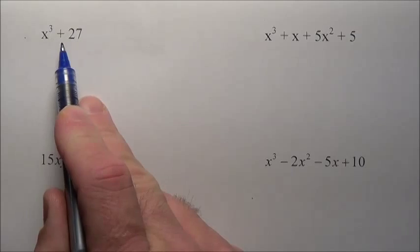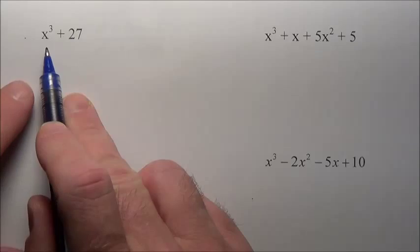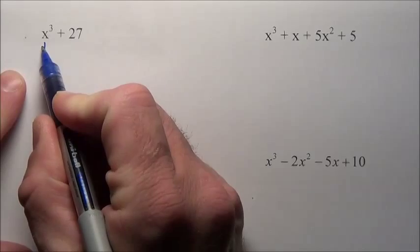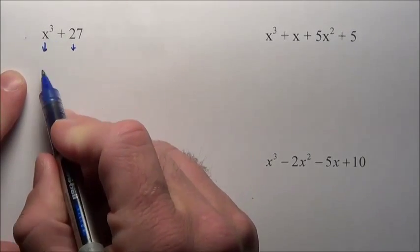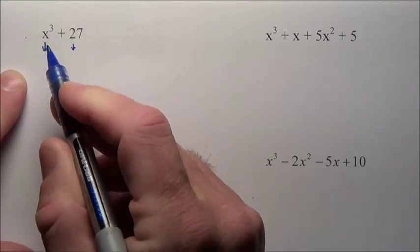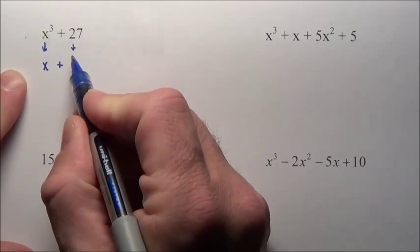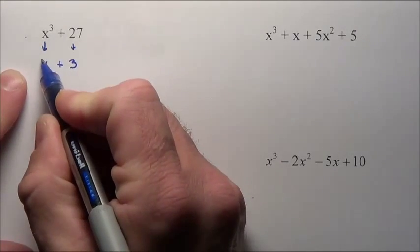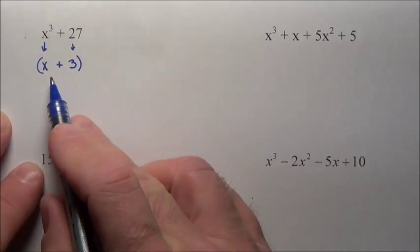So the first problem says x cubed plus 27. This is a cubic polynomial, so that is a clue I've got to use the SOFAS idea. The first thing I have to do is break each of these pieces down: the cubic root of x cubed is x, and the cubic root of 27 is 3. So the opening binomial I'm going to use is x plus 3.